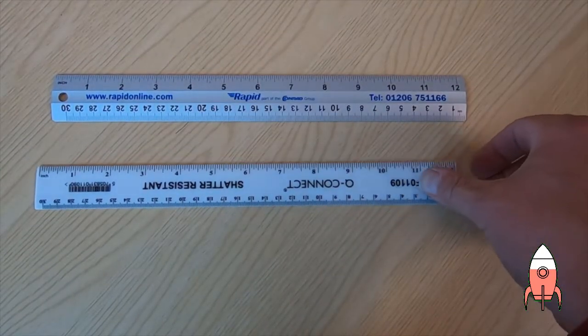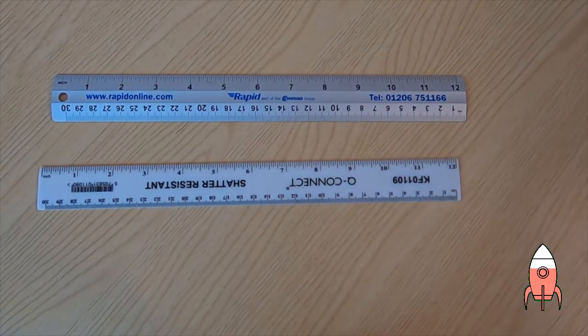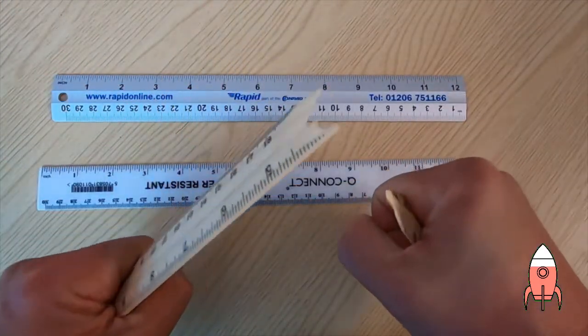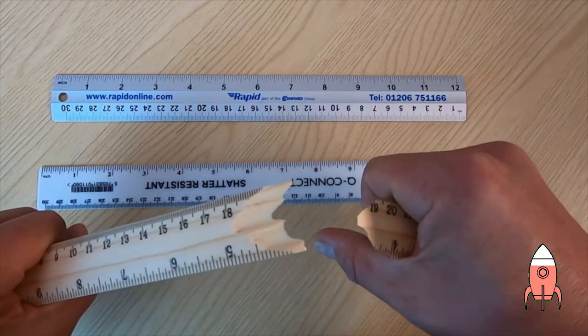So take a metal and a plastic ruler and try and bend them. Here we've got a wooden ruler and you can see it snaps very easily. It creates some very sharp edges and splinters.